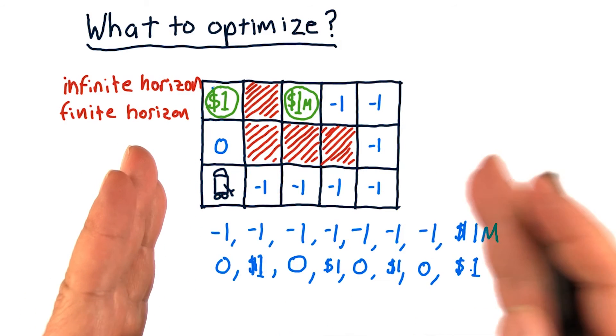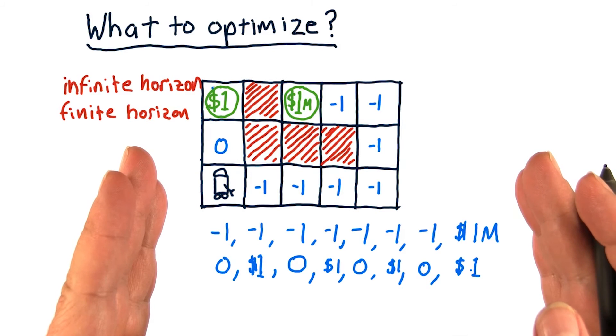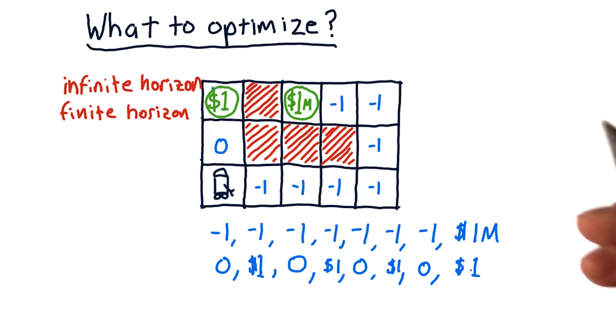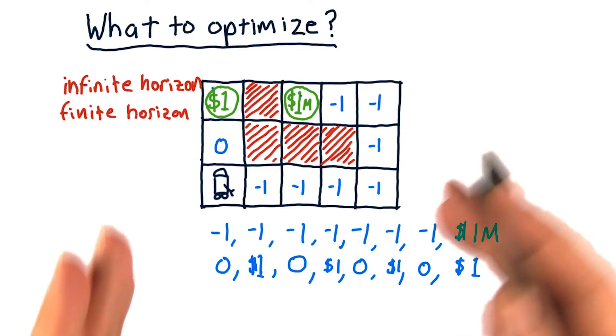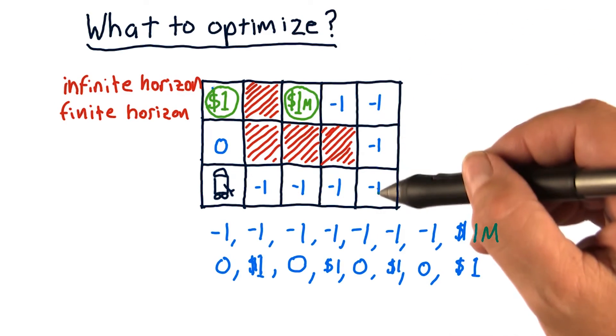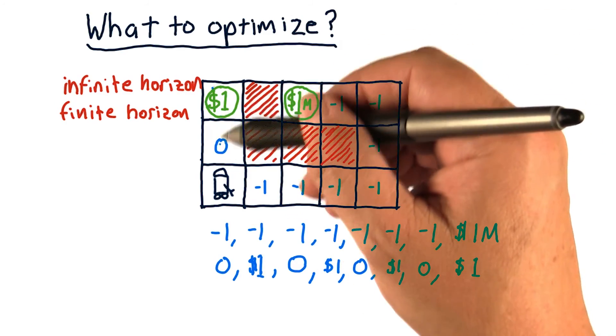So clearly, as we expand our finite horizon trivially out to, say, eight steps, going this way and tagging that one million is the best thing to do. If we carried it even further, we'd discover that then we should come back this way and go to that dollar and tag it over and over again.